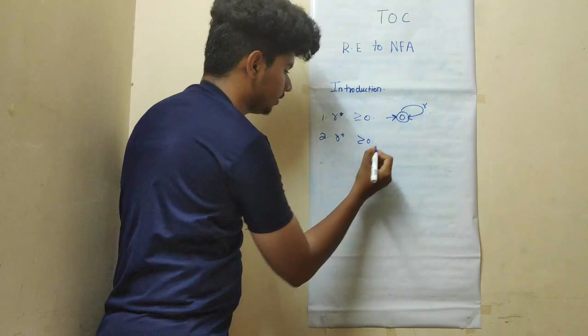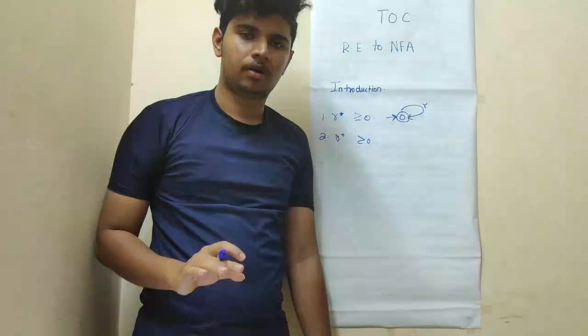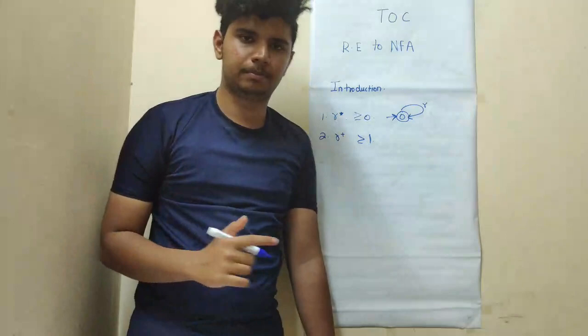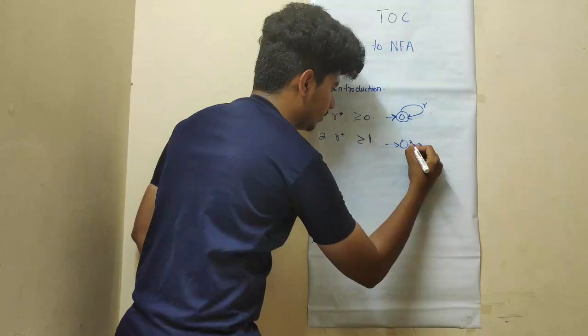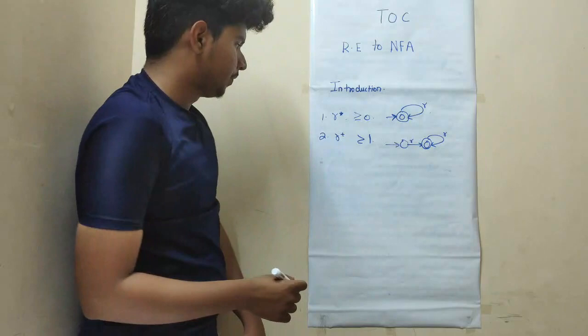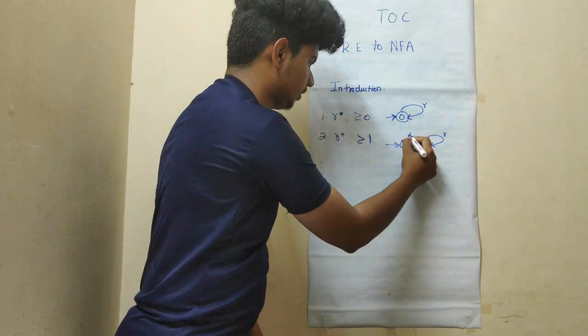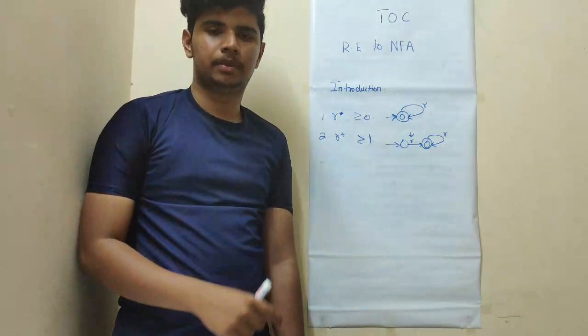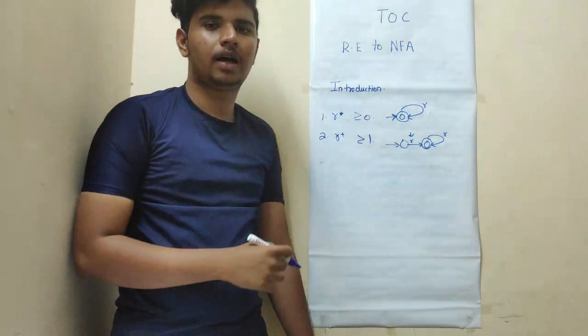Similarly, we can construct for R plus also. That is, it has to accept a single R, and after that it can accept any number of R. That is what the plus denotes — positive closure. It has to accept a single alphabet or symbol, and then it can accept any number of alphabets or symbols. We have an initial state, then R, and it has to mandatorily accept a single R, then any number of characters. This is the equivalent finite automaton representation for R plus.